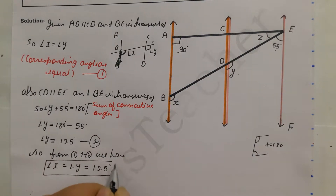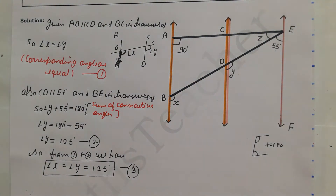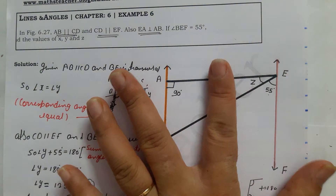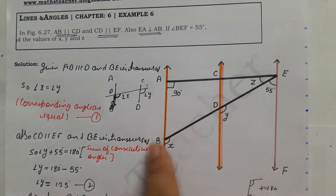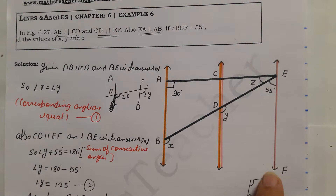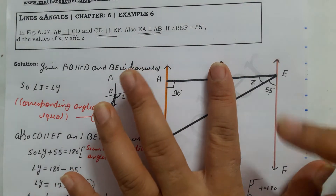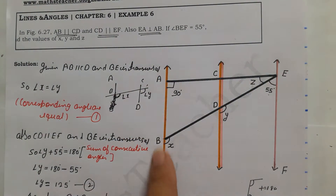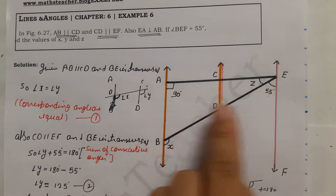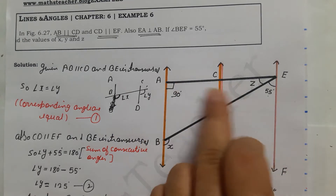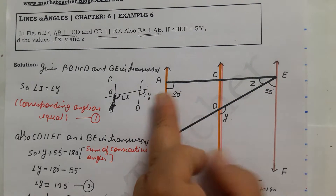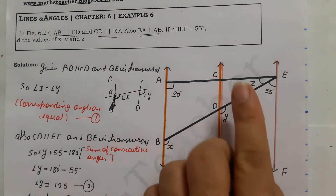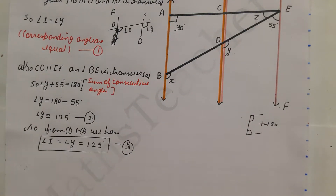Now I have to find angle z. If I look at this position, there is no direct transversal for a simple relationship. So we will draw a line through E parallel to AB and EF, and use Theorem 6.6. This line is parallel and A is the transversal, so the sum of consecutive angles again equals 180 degrees.